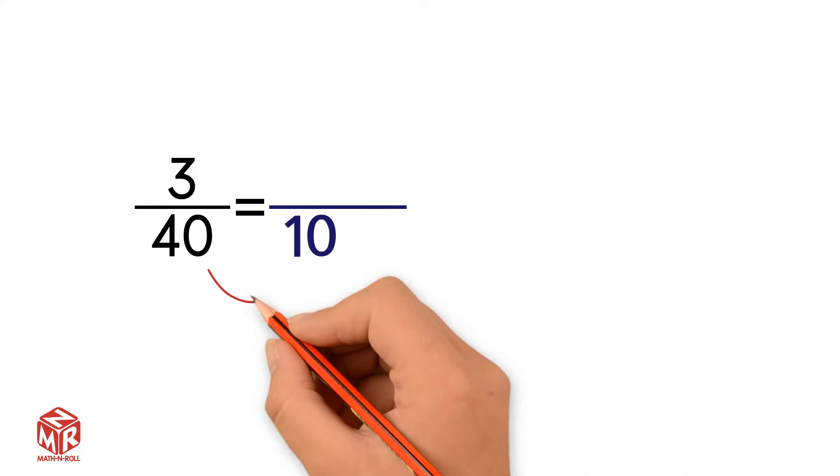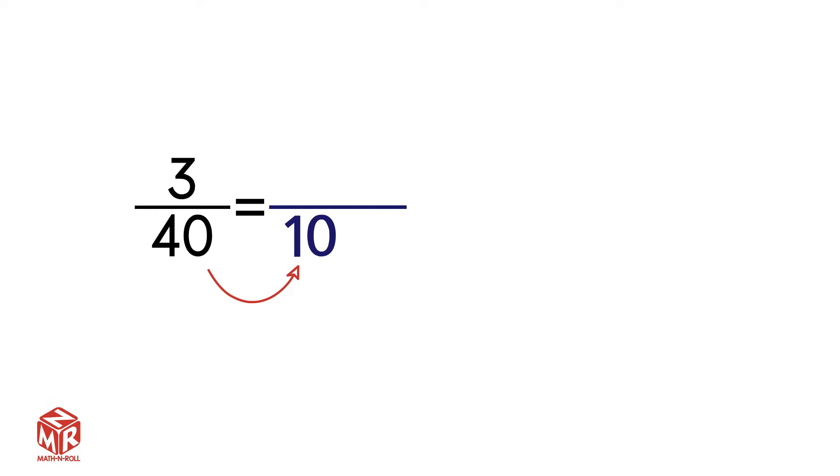Let's do another example. 3 over 40. Let's write its equivalent fraction. Can the equivalent fraction have a denominator of 10? It looks like we can, by dividing 40 by 4. However, we have to remember that we have to do the same operation to the numerator. If we divide 3 by 4, we get a fraction or a decimal, which doesn't work here.